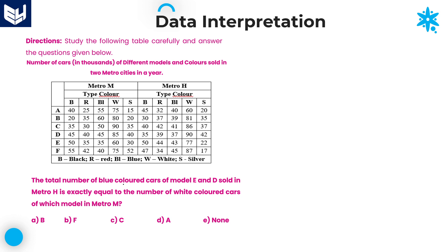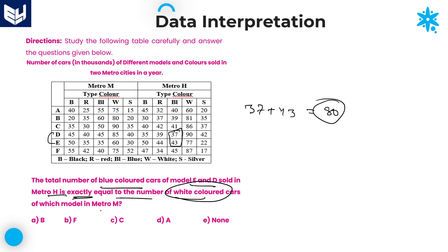Next question: the total number of blue color cars of Model E and D sold in Metro H. Blue color, Metro H, models E and D: 37 plus 43 equals 80. This value of 80,000 is exactly equal to which model's white color cars in Metro M? Looking at white color in Metro M, 80 belongs to Model B. Option A — Model B — is the right answer.